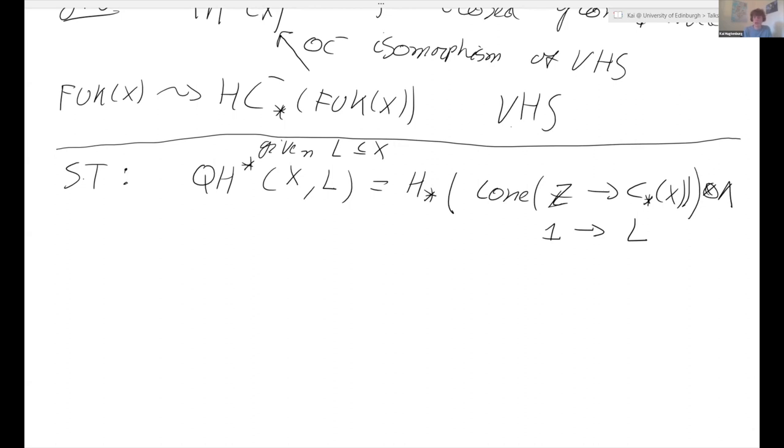So what is this cone complex? If the Lagrangian is null-homologous, this is just the one-dimensional extension of the homology of X. And then they equip this with a connection. What is the connection? An element in here we can represent by a scalar A and a cycle alpha. So A is in the Novikov field and alpha is a cycle. Well, on the scalar, we just take the derivative with respect to Q. And on the cycle alpha, well, this is the original connection we already had, that was the absolute quantum connection. But now we add an additional term to it.